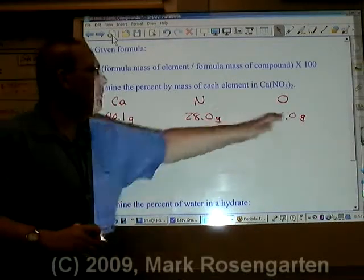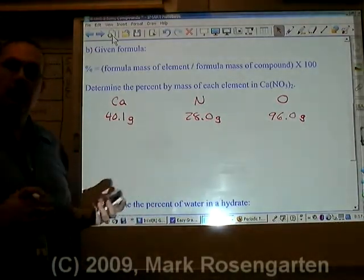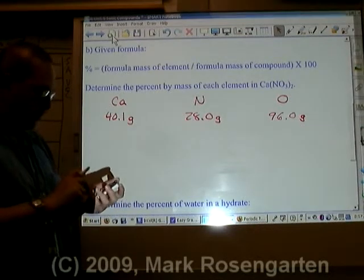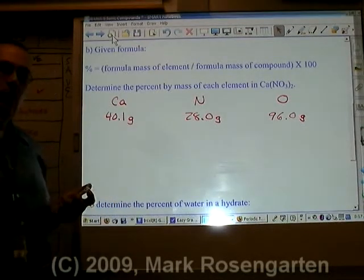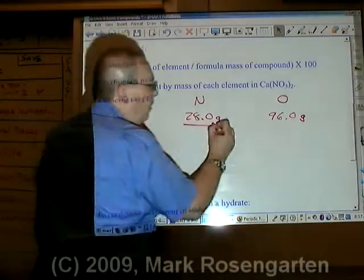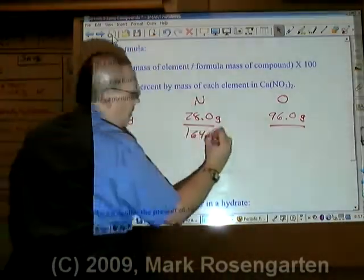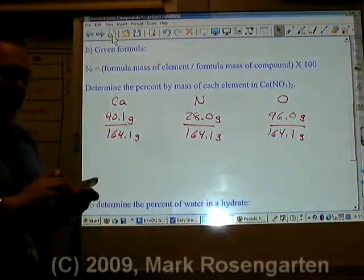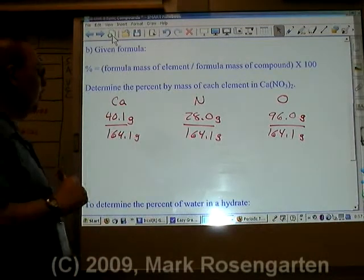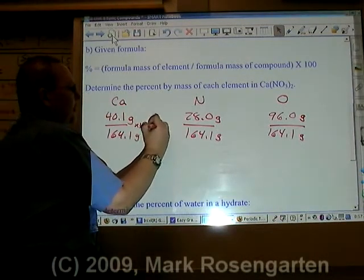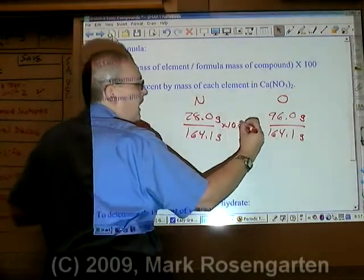That is the contribution to the formula mass of each element in the compound. Let's add them up and get the total combined mass. That comes out to 164.1, and that's the mass of the entire compound, one mole's worth. Then we simply multiply by 100 after dividing to get a percent.